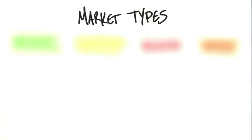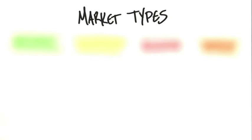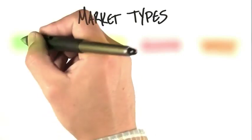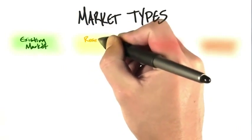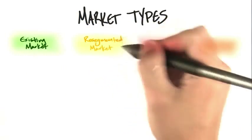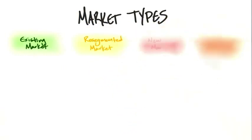So we call this market type. It turns out that there really are four types of markets for startups. One is an existing market. Another is where you take a segment or resegment an existing market. Another is a new market, and another is a clone market.